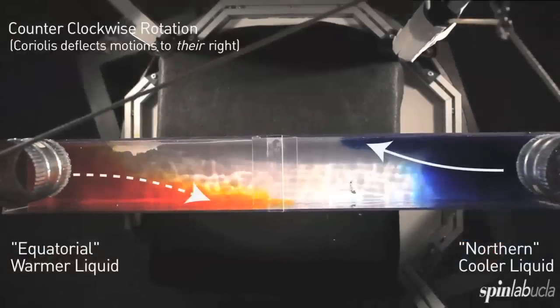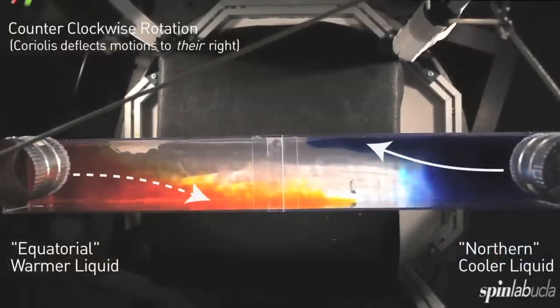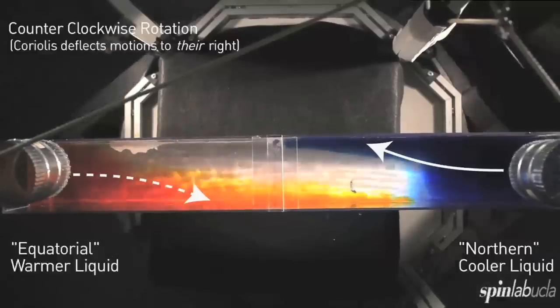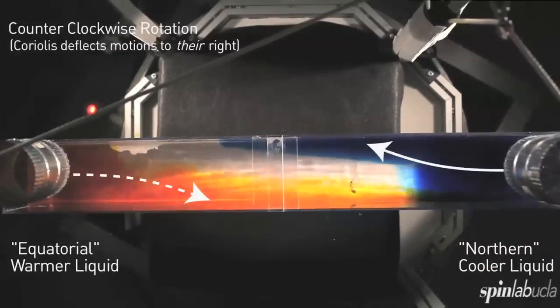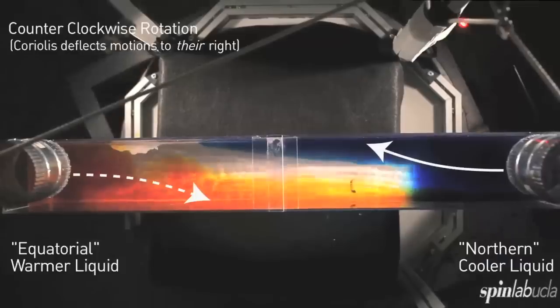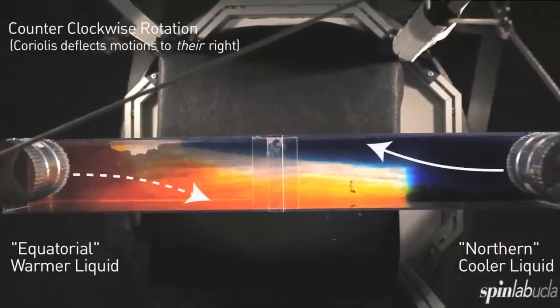But in top view, we see a significant difference. Now the flows are deflected to the right of their intended path, so they're each hugging one side wall as we predicted based on the effects of the Coriolis accelerations.